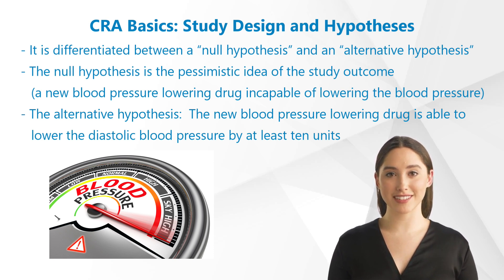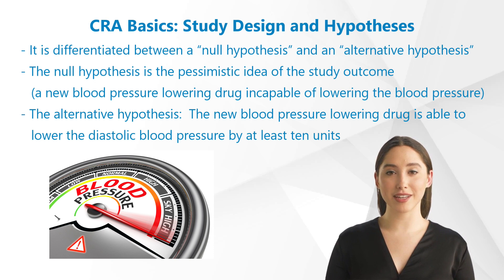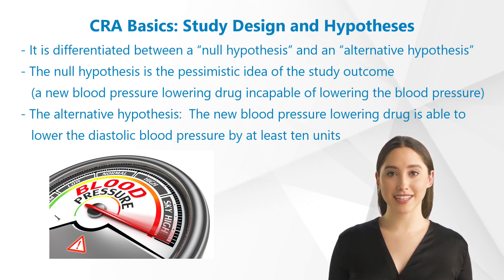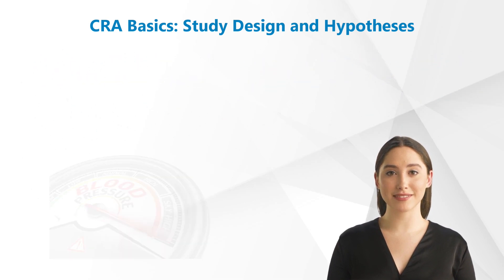It is roughly differentiated between a null hypothesis and an alternative hypothesis. The null hypothesis is the pessimistic idea of the study outcome. In our example, a new blood pressure lowering drug would thus be incapable of lowering the blood pressure by 10 units. Whereas the alternative hypothesis could be that the new blood pressure lowering drug is able to lower the diastolic blood pressure by at least 10 units.